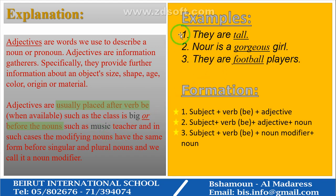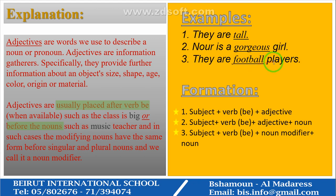Example one: 'They are tall' — subject 'they', verb BE 'are', adjective 'tall'. Example two: 'Noor is a gorgeous girl' — 'Noor' is the subject, 'is' is verb BE, 'gorgeous' is the adjective, and 'girl' is the noun. Example three: 'They are football players' — 'football' is the noun modifier telling us more about 'players'.